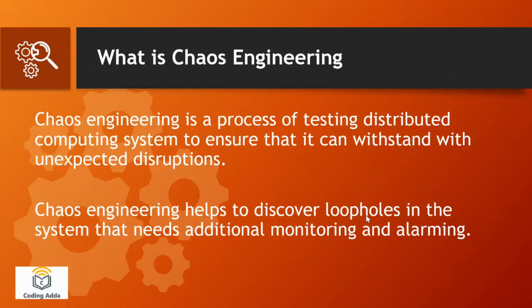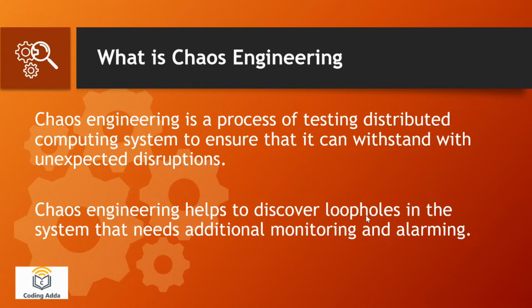Before jumping into AWS FIS, let's understand what chaos engineering is. Chaos engineering is basically a process of testing a distributed computing system to ensure that it can withstand unexpected disruptions. In chaos engineering, we actually try to deliberately put some unexpected conditions onto a system and see how that system is behaving under those circumstances.